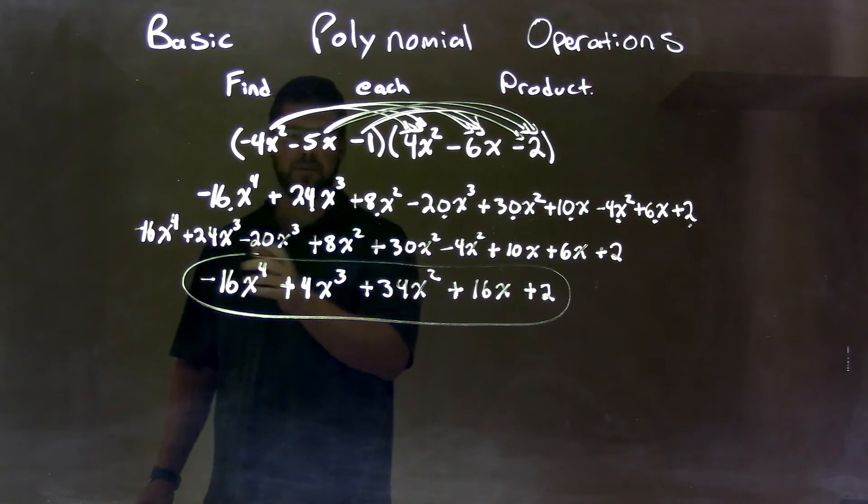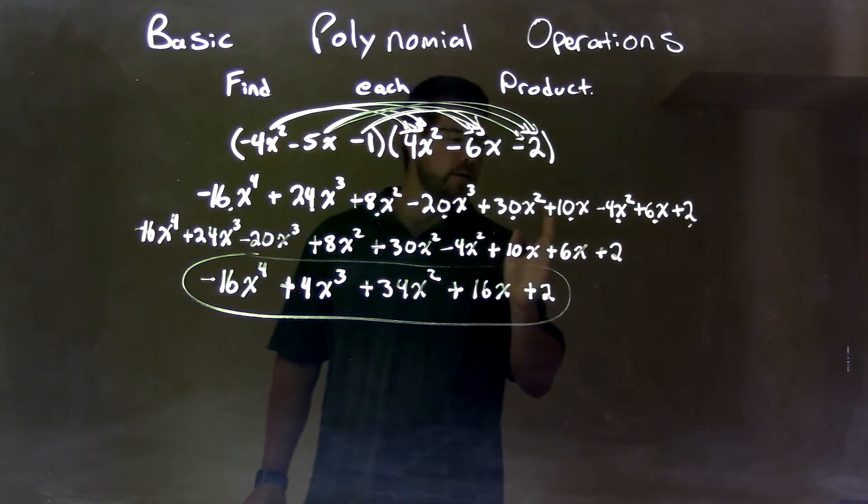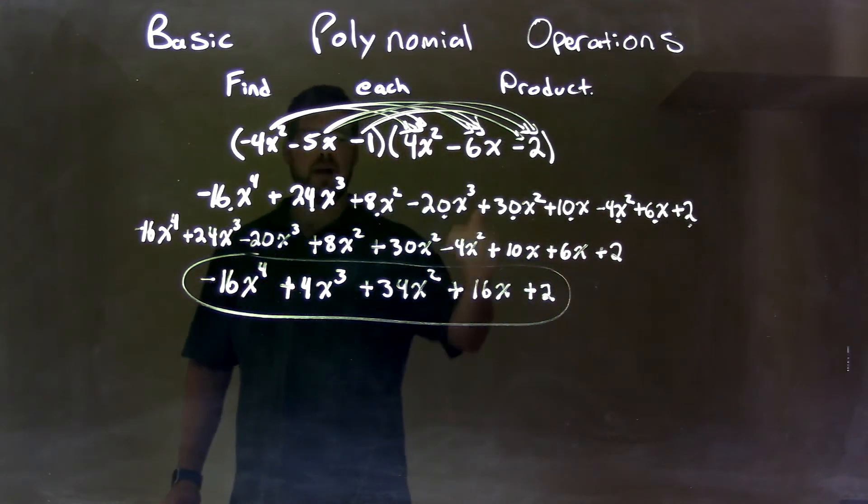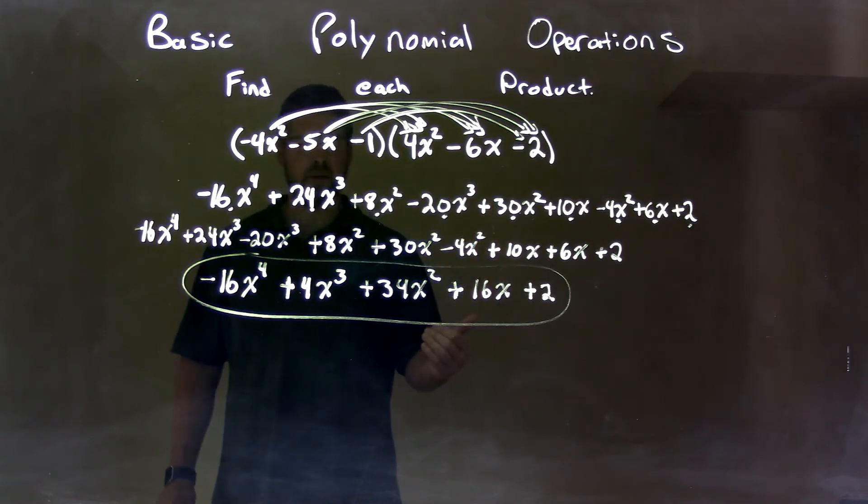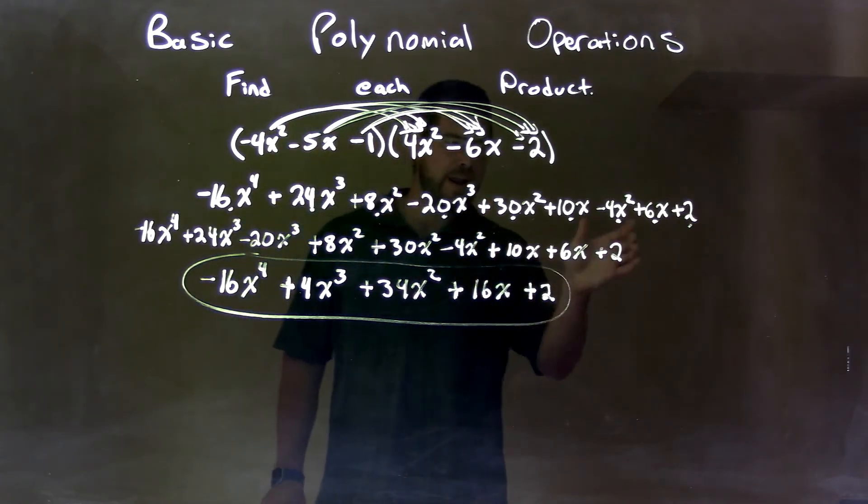Then I simplify that by combining those like terms once it was easy because they're all next to each other.